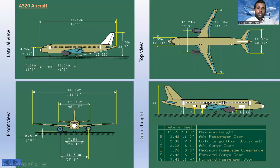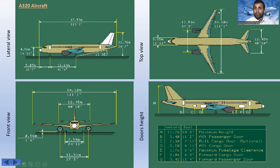Here are the dimensions of the A320 aircraft. In the lateral view, from nose to tail is around 37.57 meters. The wingspan — the length between the two wingtips — is around 34.10 meters. You can also see the front view and top view here.